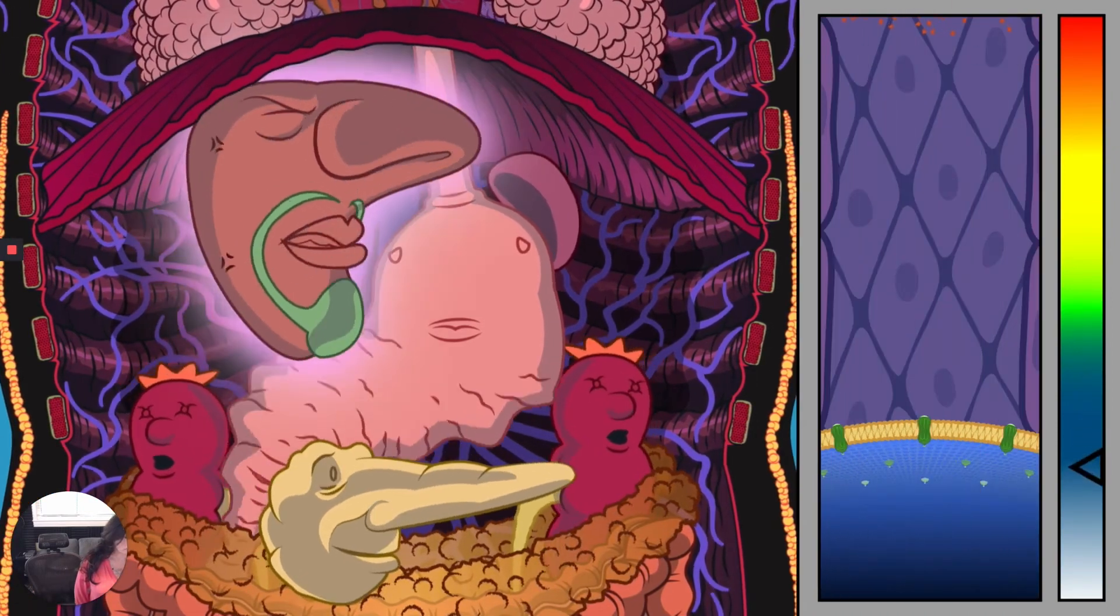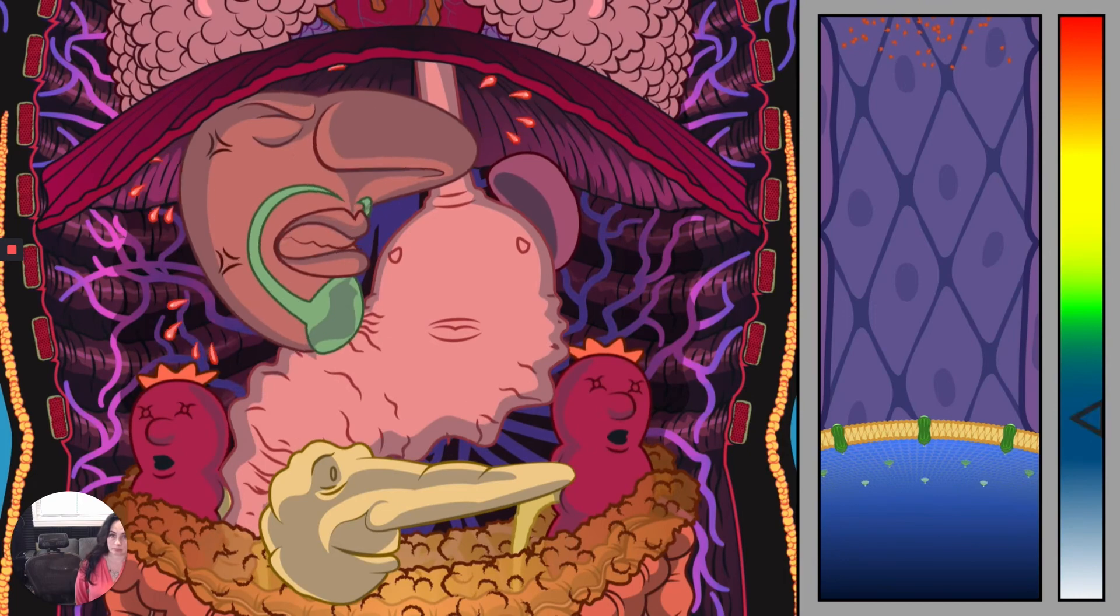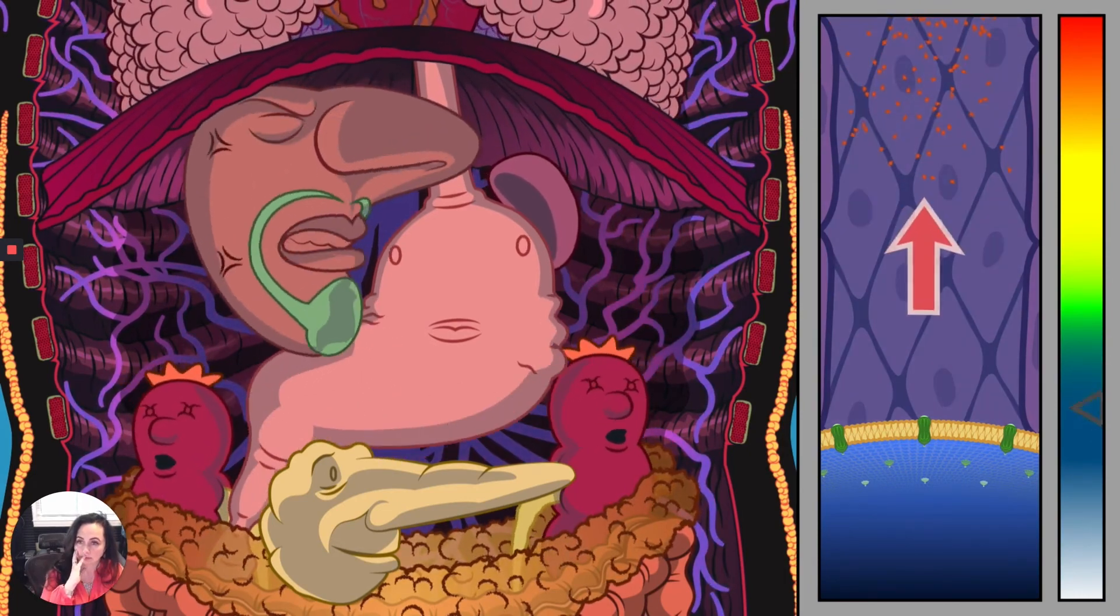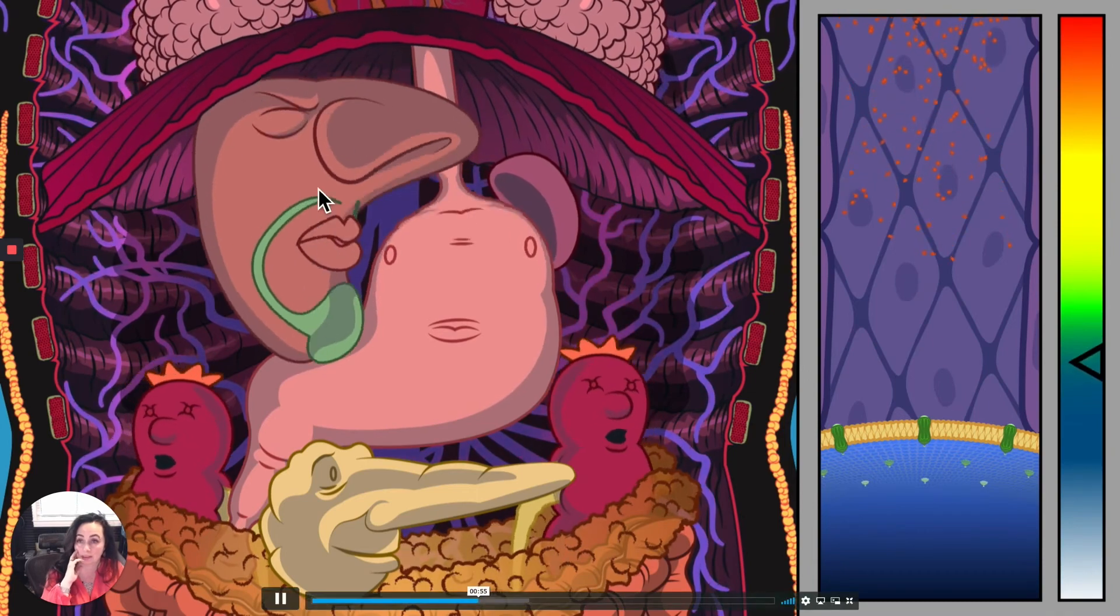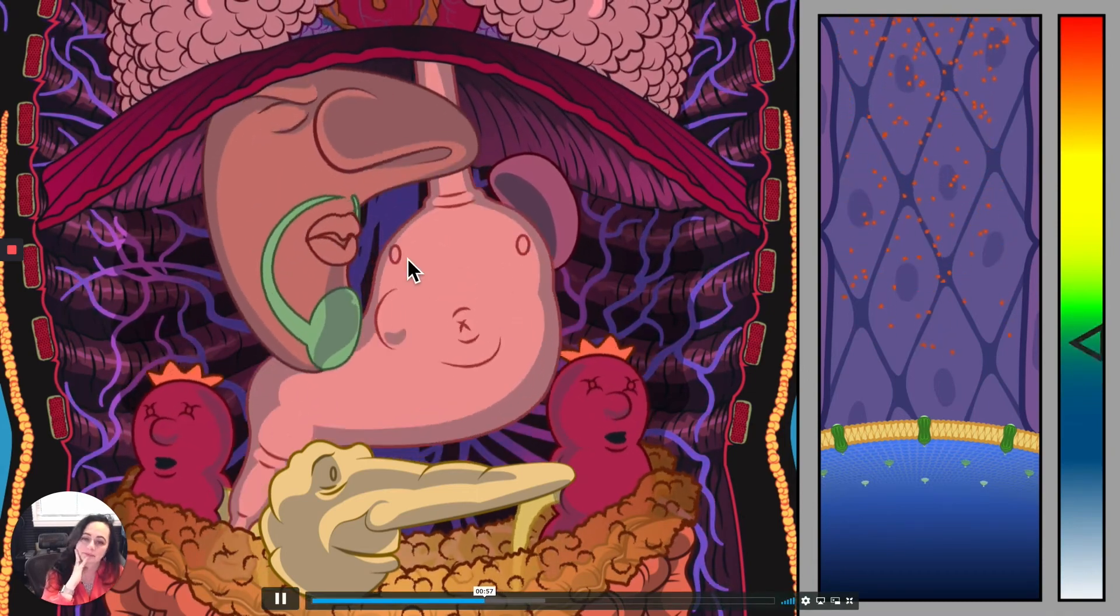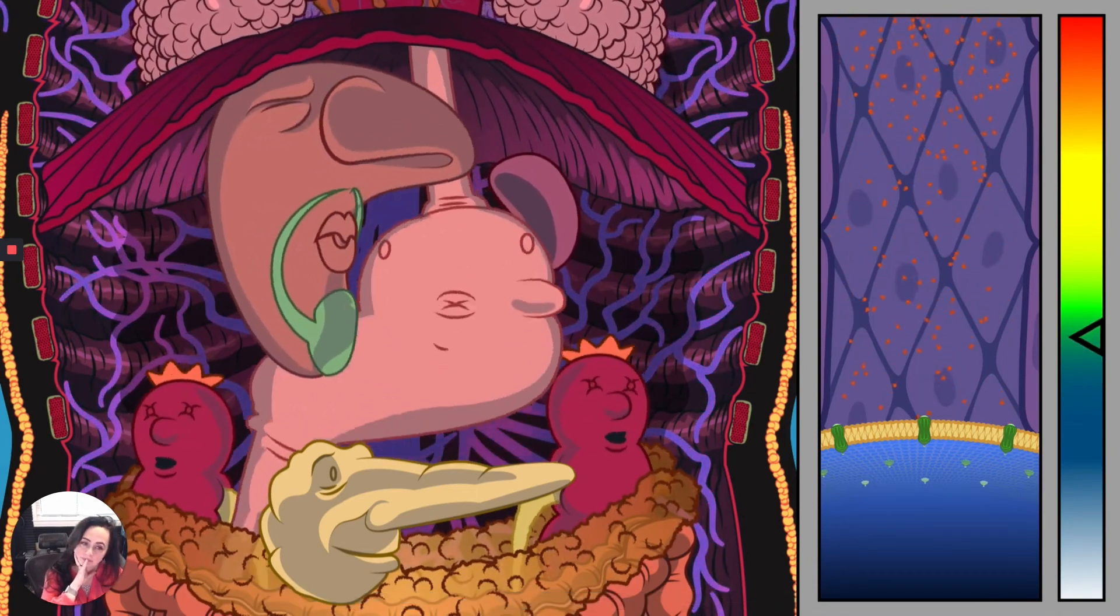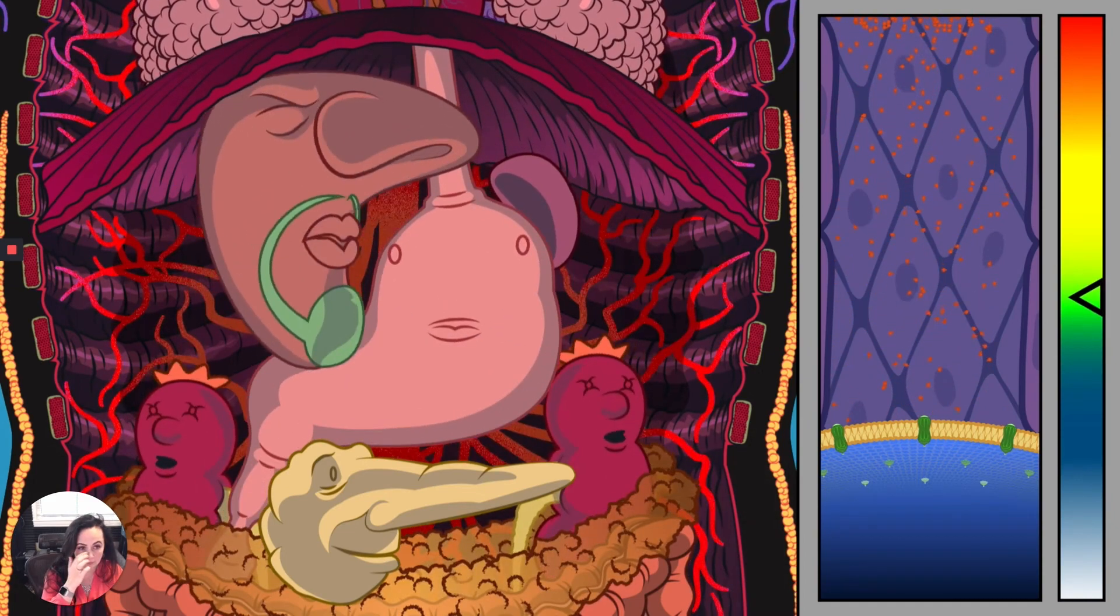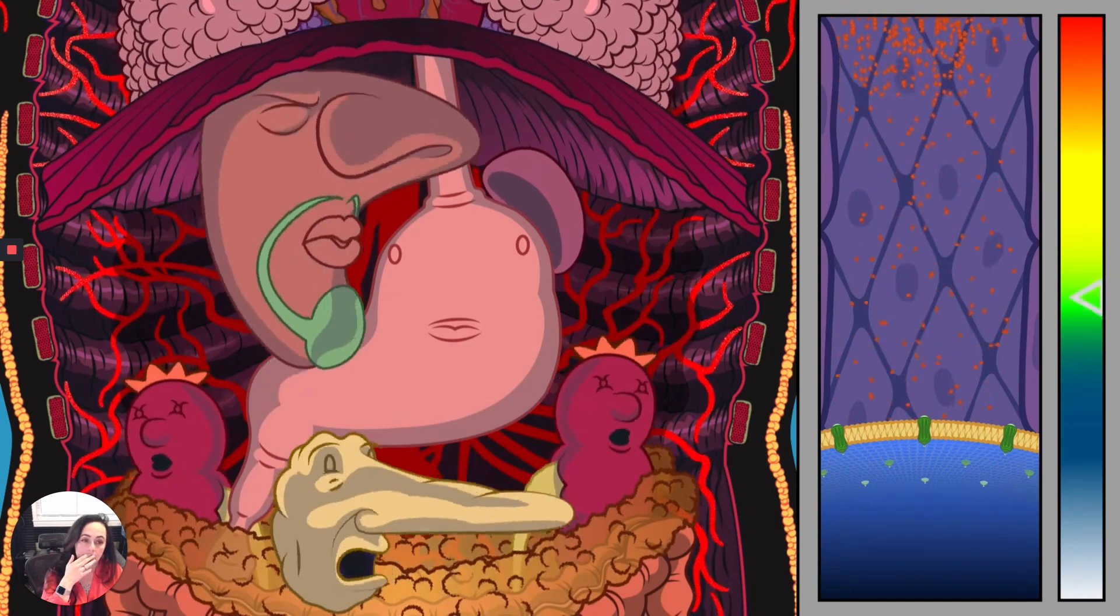Between meals, the liver keeps blood sugar levels from dropping too low by releasing stored sugar into the bloodstream. After a meal, sugar from food enters the bloodstream and blood sugar goes up. The pancreas responds by releasing insulin.